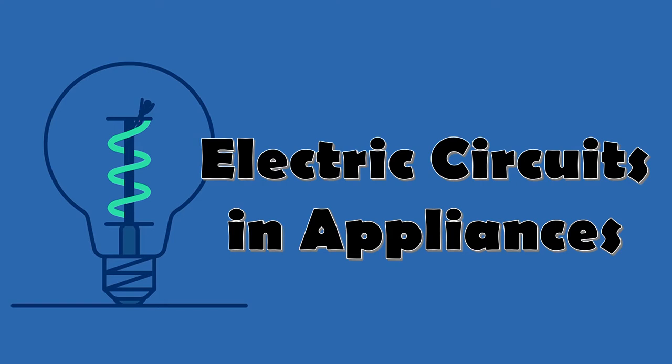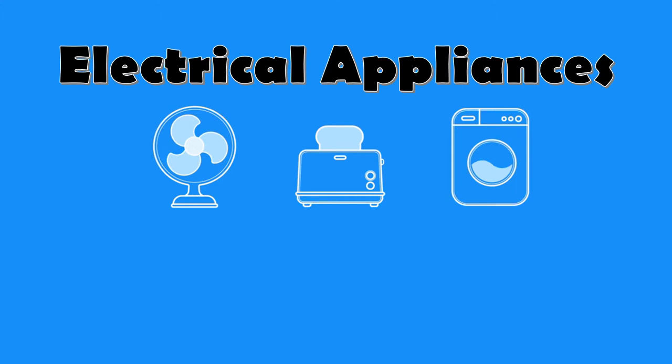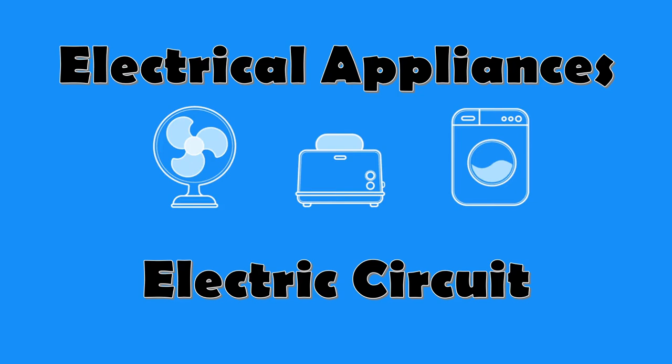Let us first have electric circuits in appliances. Electrical equipment are also called electrical appliances. An electrical appliance is made up of different connecting parts. These parts are connected to form an electric circuit.